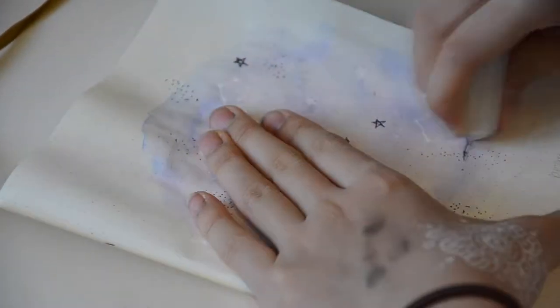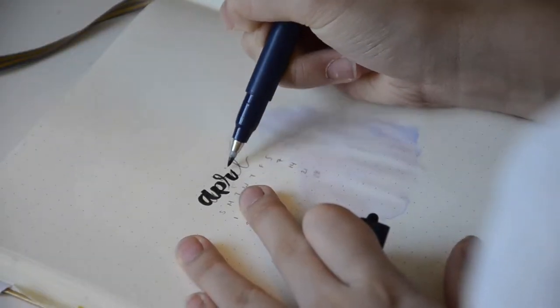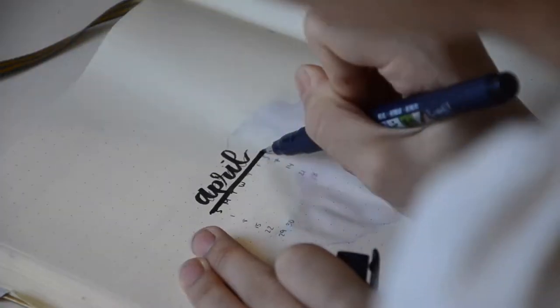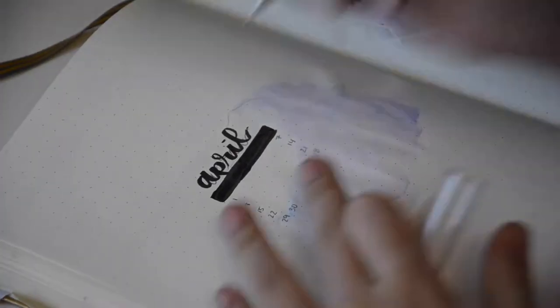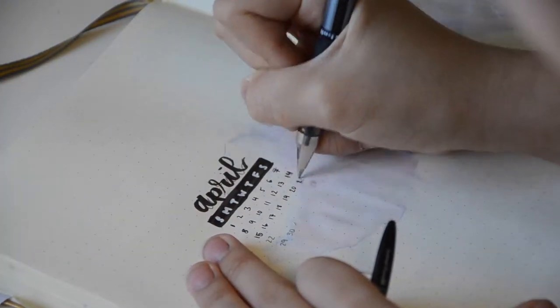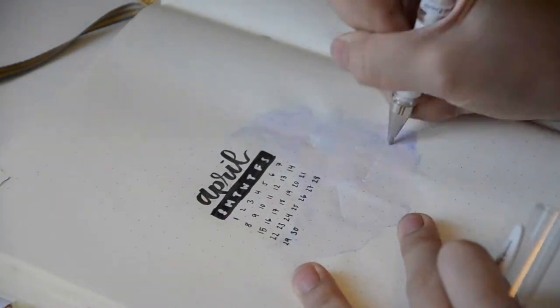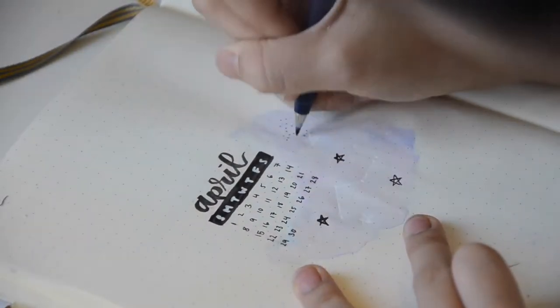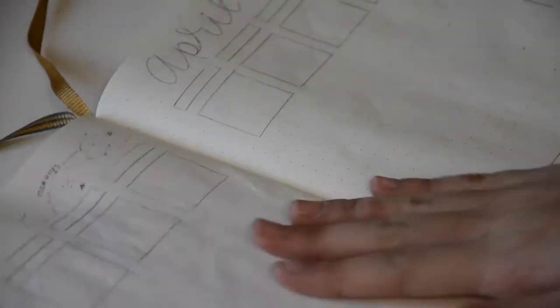My camera decided to stop recording, so that's why the big change is there, but for the other page, I'm using a Tombow Fudenosuke brush pen and filling out my mini calendar. I'm also adding accents with my Tombow Fudenosuke brush pen and my white gel pen by adding stars and other constellations.